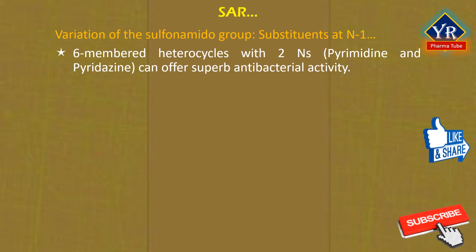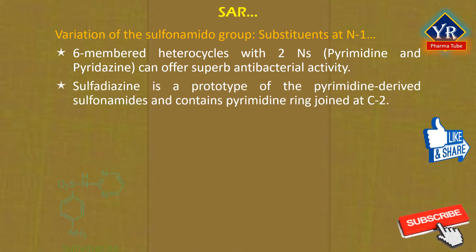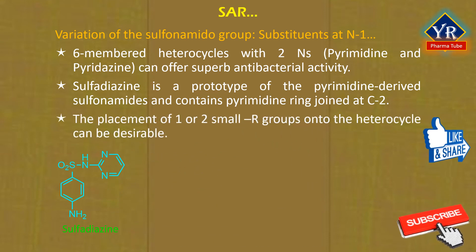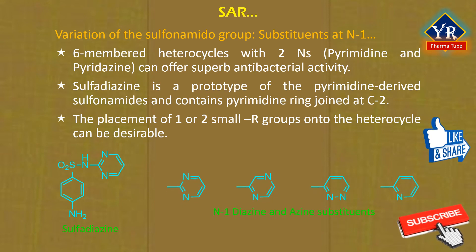Heterocycles which contain a third heteroatom, for example a thiazole derivative such as sulfamethoxazole, offer no advantage over agents which possess the simple oxazole, isoxazole, or thiazole moiety. The optimum five-membered heterocycles are depicted here. Six-membered heterocycle rings that exclusively contain two nitrogen atoms, such as pyrimidine and pyridazine joined to the sulfonamido nitrogen, can confer superb antibacterial properties. Sulfadiazine is a prototype of the pyrimidine-derived sulfonamides and contains a simple pyrimidine ring joined at the C2 position of the sulfonamido nitrogen center. The attachment of a pyrimidine substituent at the C6 position is an important isomeric modification. In addition, the placement of one or two small alkyl substituents onto the heterocycle can be desirable. With pyrimidine derivatives, both methyl and methoxy substituents afford agents that display outstanding antibacterial properties such as sulfisomidine, sulfamethoxine, and sulfadimethoxine. The most significant six-membered heterocyclic substituents are summarized here.